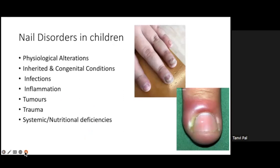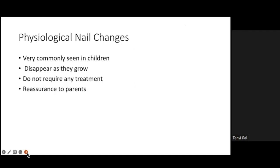The most important category is physiological alterations, which is one of the commonest entities we should know about. Parents are often worried, but these are physiological alterations that children can outgrow, and we just need to reassure the parents. Other categories include inherited and congenital conditions, infections, inflammations, tumors, trauma, and systemic and nutritional deficiencies.